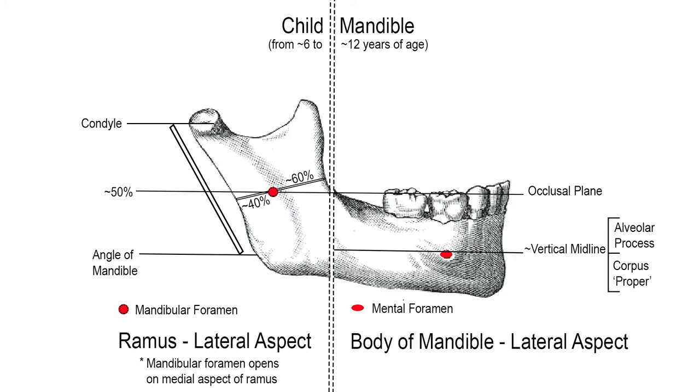The mental foramen, beneath the first deciduous molar — still where the body of the mandible meets the alveolar process above it — will have shifted near to the vertical midline per the bony depositions on the inferior aspect of the corpus mandibulae. These foramen shifts are relative shifted positions over periods of time and not physical migrations as such. It's not like they decided to move from one location to another just to make local anesthesia administration more complicated for us.